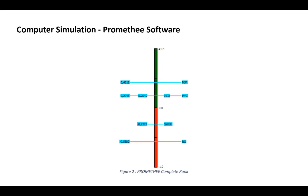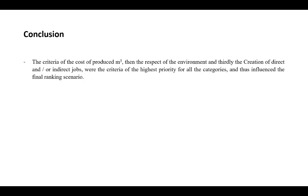The multi-criteria analysis can also be performed using computer software. We implemented the data collected in the PROMETE software, and the results obtained allowed us to validate the ranking previously elaborated by the matrix method. In conclusion, the criteria of cost of produced cubic meter, respect of the environment, and creation of direct and/or indirect jobs were the criteria of highest priority for all categories and thus influenced the final ranking scenario.